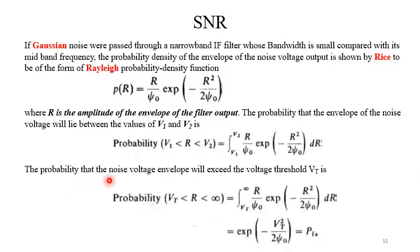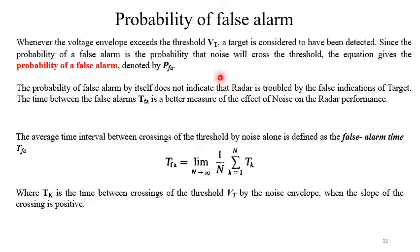If Gaussian noise is passed through a narrow-band IF filter whose bandwidth is small compared to its mid-band frequency, the probability density of the envelope of the noise voltage output — shown by Rice — is of the form of a Rayleigh probability density function: p(r) = (r/ψ₀) · exp(−r²/2ψ₀), where r is the amplitude of the envelope of the filter output. The probability that the noise voltage envelope will lie between values v₁ and v₂ is the integral from v₁ to v₂ of this density function.